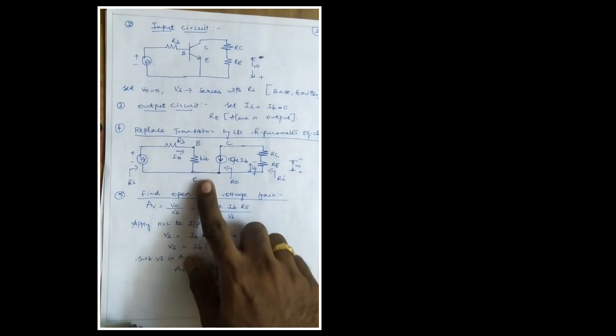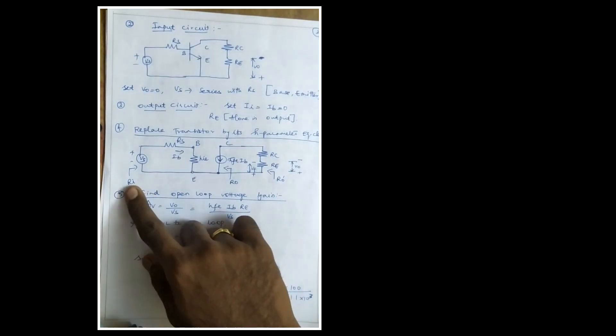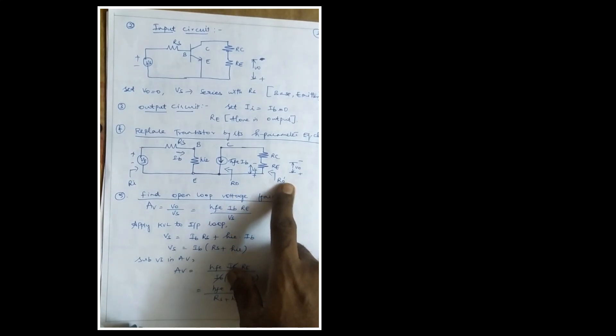Step four: replace the transistor with the equivalent h-parameter circuit. The h-parameters are: hie (input impedance), hoe (output admittance), hfe (forward current gain), and hre (reverse voltage gain). We concentrate on hie and hfe·Ib. Draw the equivalent circuit — emitter, base, and collector. The collector is at the output; with respect to input it is the base. Ri is the input and Ro is the output.